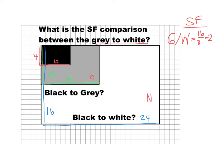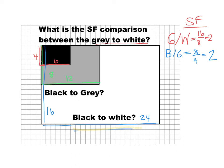For black to gray: black is our original, gray is our new. We take the smaller gray side, which is 8, over the smaller black side, which is 4. That simplifies to 2 — so scale factor is 2. For black to white: black is the original, white is the new. We put the new smaller side 16 over the original smaller side 4. 16 over 4 is 4. So the scale factor from black to white is 4.